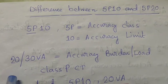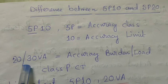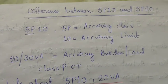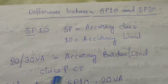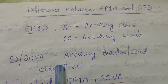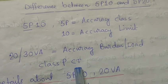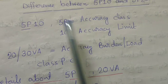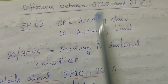Some nameplates of the CT have written 20, 10, 20, or 30 VA — this is the burden or load that can be connected to the secondary side of the CT. The CT will be class P type, which mentions the burden, the accuracy class, and the 5P10 or 5P20 designation.